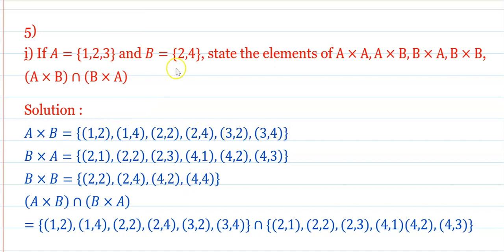Next, B cross A = {(2,1), (2,2), (2,3), (4,1), (4,2), (4,3)}.